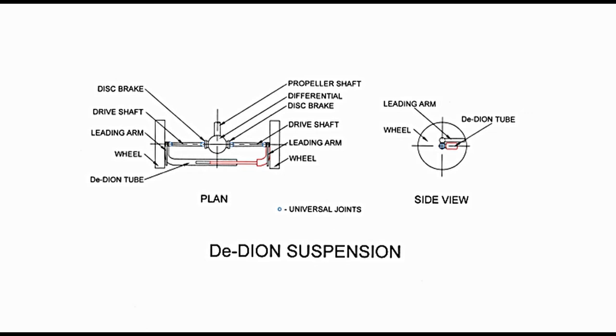As the vehicle moves over a bump or passes through a pothole, camber changes slightly and the distance between the two wheels also varies. This variation is taken up by the sliding joint provided in the De Dion tube. De Dion suspension has been quite popular with auto manufacturers for a long time.